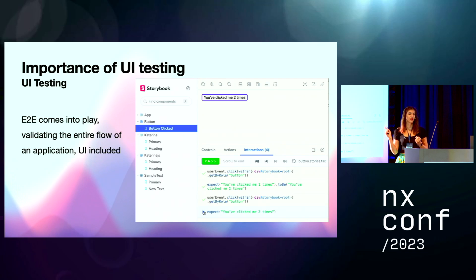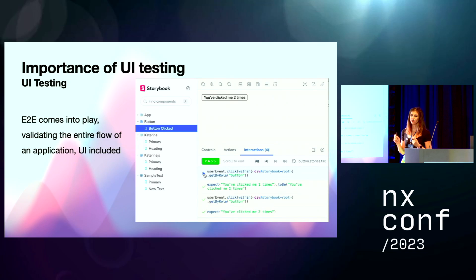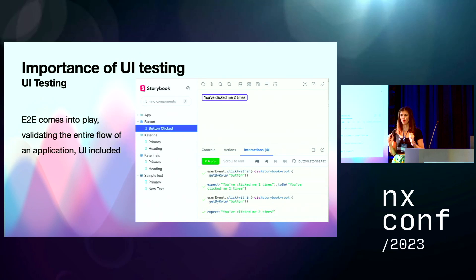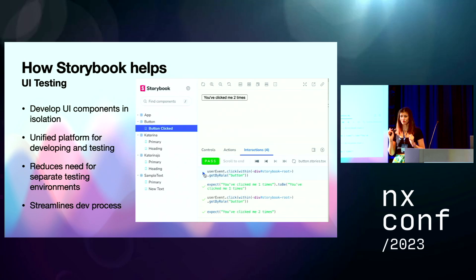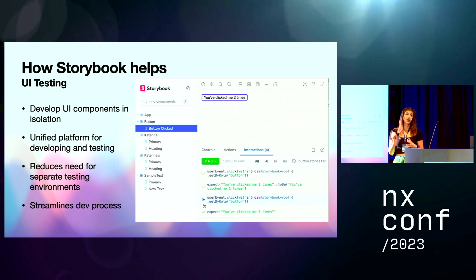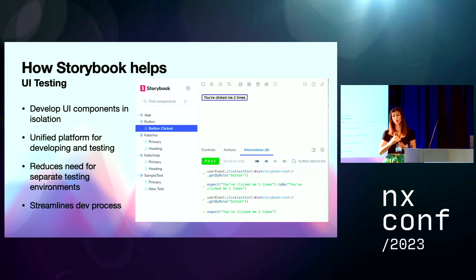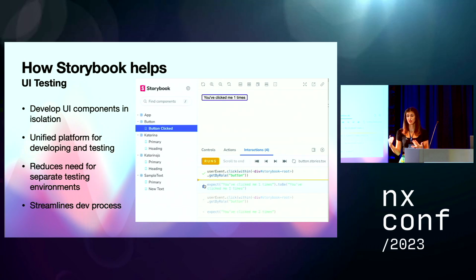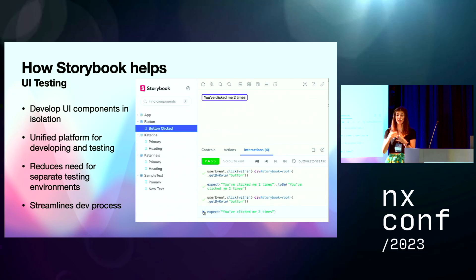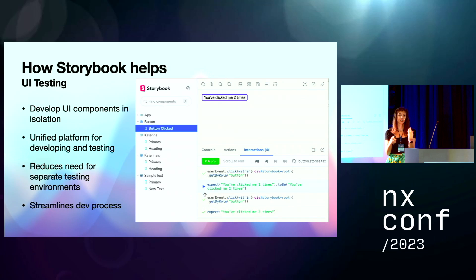This is also where E2E tests come into play by testing the whole functionality of an application, UI testing included. How does Storybook help in UI testing? Storybook is a tool for developing UI components in isolation. It supports various frameworks and promotes component-driven development. Storybook provides a unified platform for developing and testing components, reduces the need for separate testing environments — which is exactly what we're going to be focusing on today — and streamlines the development process.